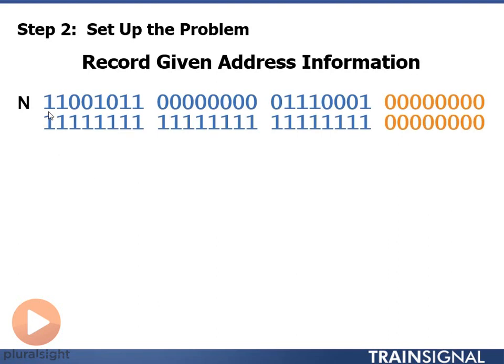Once again to reiterate, our internet service provider essentially provided us with the first 24 bits of an address. Those first 24 bits are unchangeable for us. However we can do whatever we want with the last eight bits.